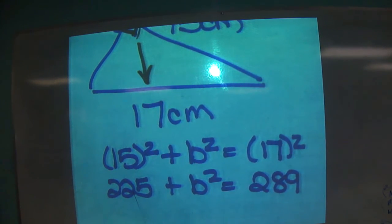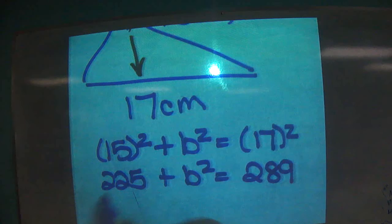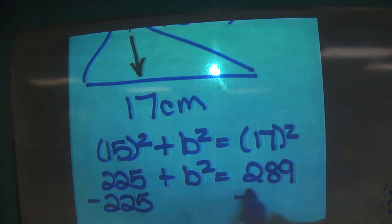How do I get B squared by itself? Isolated. Isolated by inverse operation, subtracting 225 from each side. We're adding negative 225. So B squared equals 289 minus 225, which is 64.